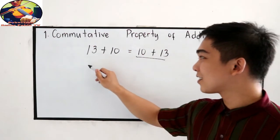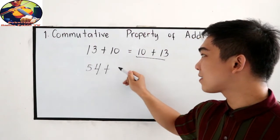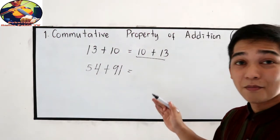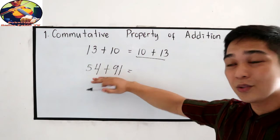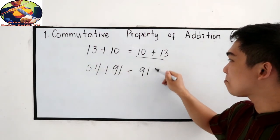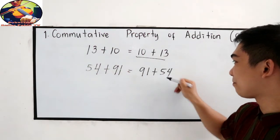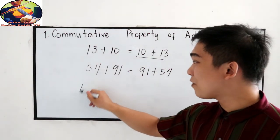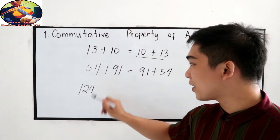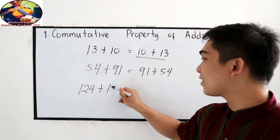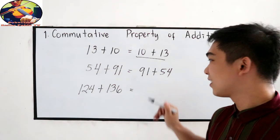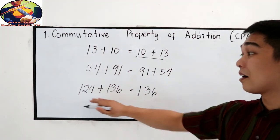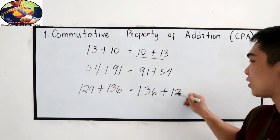Next, if I have 54 plus 91, by commutative property, that is equal to 91 plus 54. Next, I have 124 plus 136, which is equal to 136 plus 124.